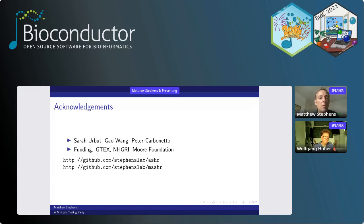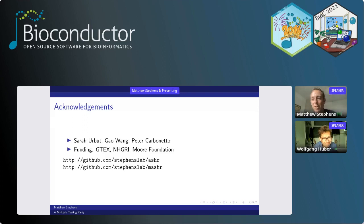Thanks especially to Sarah Urbut, Gao Wang, and Peter Carbonetto who did the work. The multivariate multiple testing paper is Urbut et al. 2019, available on my website. Thanks to GTEx, NHGRI, and the Moore Foundation for funding. The software is mashr — multivariate adaptive shrinkage — available for those interested. Happy to take questions.